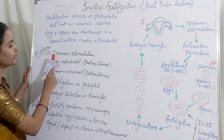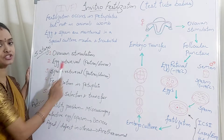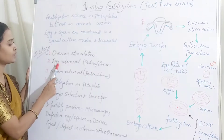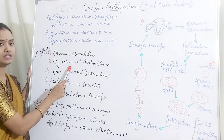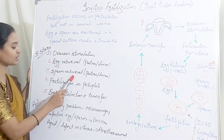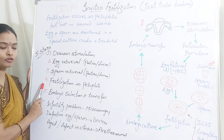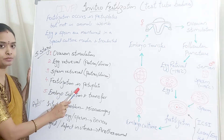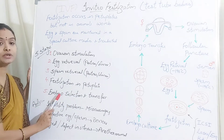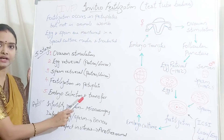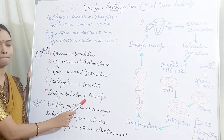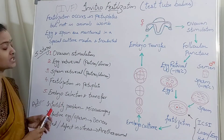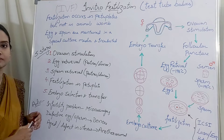The first stage is ovarian stimulation. The second stage is egg retrieval. Third is sperm retrieval. Fourth is fertilization in petri plates. Fifth is embryo selection and transfer. Let us discuss about the first one — ovarian stimulation.